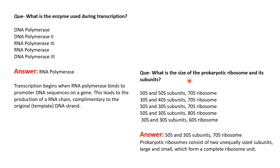The next question asks the size of the prokaryotic ribosome and its subunits. Options include 50S plus 50S giving 70S, 30S plus 40S giving 70S, and 50S plus 30S giving 70S. The correct answer is 50S large subunit plus 30S small subunit, which gives a 70S ribosome for prokaryotes. Do not add 50 and 30 to expect 80S — prokaryotic ribosomes consist of two unequally sized subunits forming a complete 70S ribosome unit.